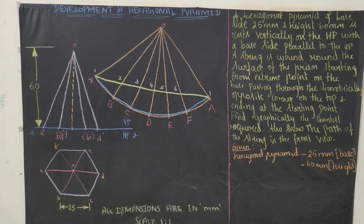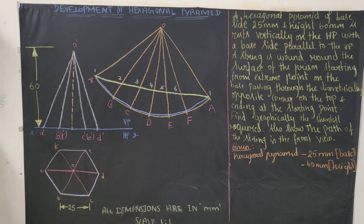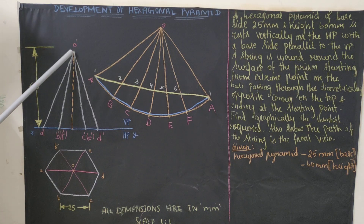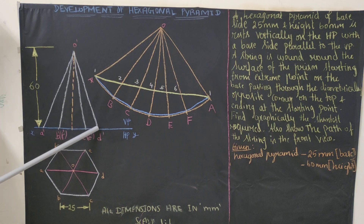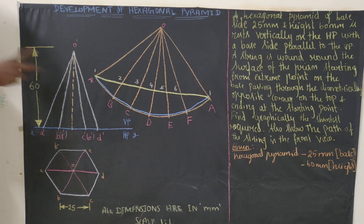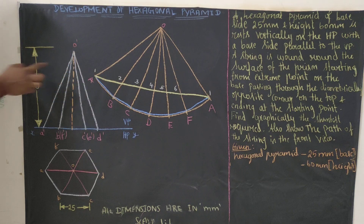Whenever we come across a pyramid we will use the radial line method. For prisms and cylinders we use the parallel line method; for pyramids and cones it is the radial line method. Measure from O dash to D dash - this is your true slant length. Take your compass, measure it, and draw a slanting line.